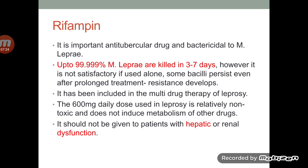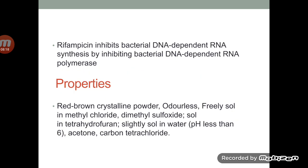The next drug used in the treatment of leprosy is rifampicin. It is also an important anti-tubercular drug and it is bactericidal — it kills the bacteria Mycobacterium leprae within 3 to 7 days. But it is not satisfactory if used alone because some bacteria persist even after prolonged treatment, and resistance to this drug develops very soon. Therefore, it is included in the multi-drug therapy of leprosy. A 600 mg daily dose is recommended and it is relatively non-toxic. It should not be given to patients with hepatic or renal dysfunction.